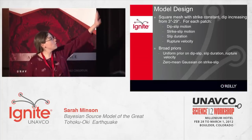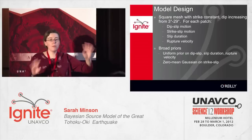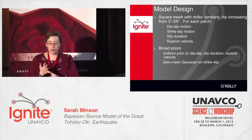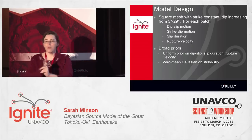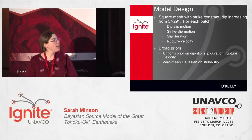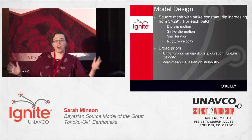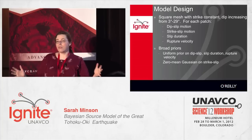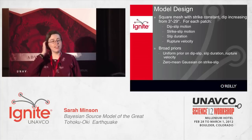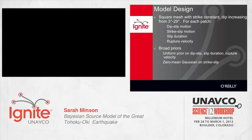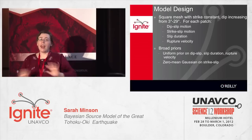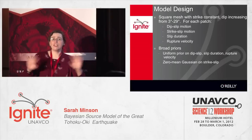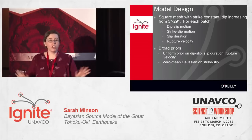Our model is merely a square mesh. For each patch, there are four parameters we solve for: two components of slip, the rupture velocity on that patch, and the duration of slip on that patch. We use very broad priors because we're not trying to find a model — what we want to see is what the data contain, what parts of the rupture process are well-constrained, and what parts the data just have no resolution on.